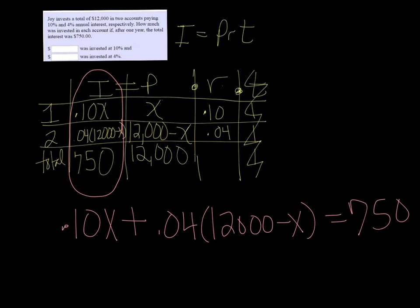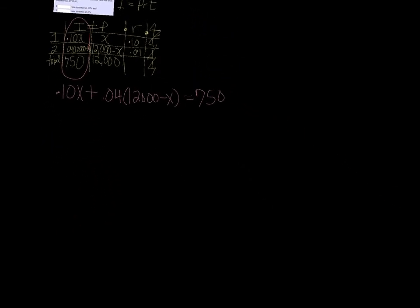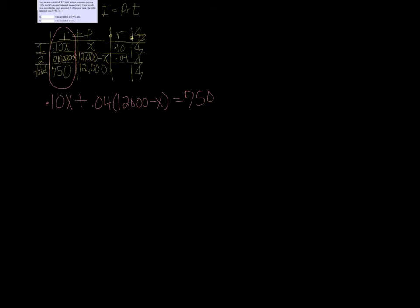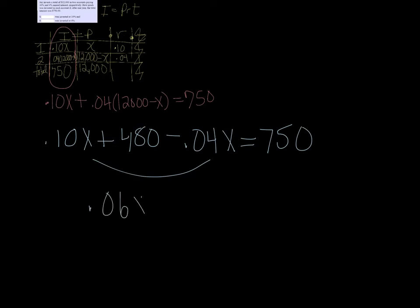But I need more room. Alright, so distributing, let's see, we get .10x plus .04 times 12,000 is 480, and then minus .04x equals 750. These two go together, I get .06x plus 480 equals 750.